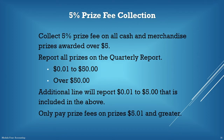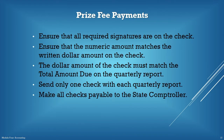Collect a 5% prize fee on all cash and merchandise prizes awarded over $5. Report all prizes on the quarterly report: $0.01 to $50, and over $50. An additional line will report $0.01 to $5 that is included in the above. Organizations are legally obligated not to collect prize fees on awards of $5 and under; only pay prize fees on prizes of $5.01 and greater. Ensure that the check is signed; if the check requires two signatures, make sure it has both. Make sure the numeric amount matches the written dollar amount on the check, and that the dollar amount on the check matches the total amount due on the quarterly report.